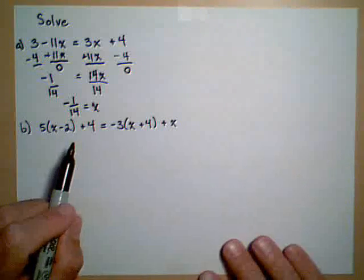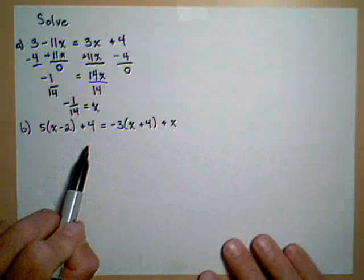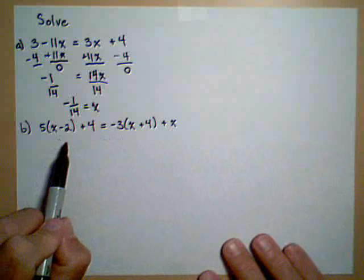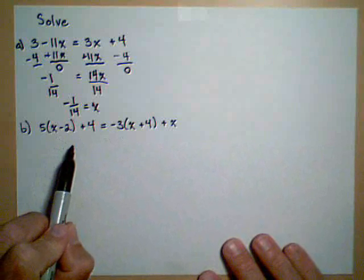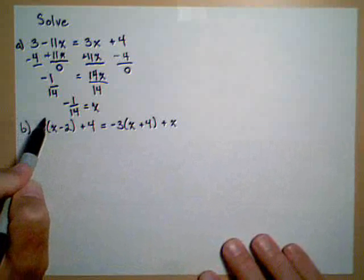In our second example, we have to do a little bit of work before we start getting everything on the same side. First thing we're going to want to do is get rid of those parentheses so we can move things around easily.